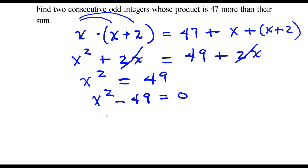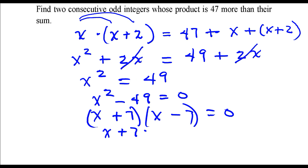I can factor this, this is a difference of two squares. Factor this into a product of two binomials, set each factor equal to zero, solve each equation. So x is negative 7 and x is positive 7.